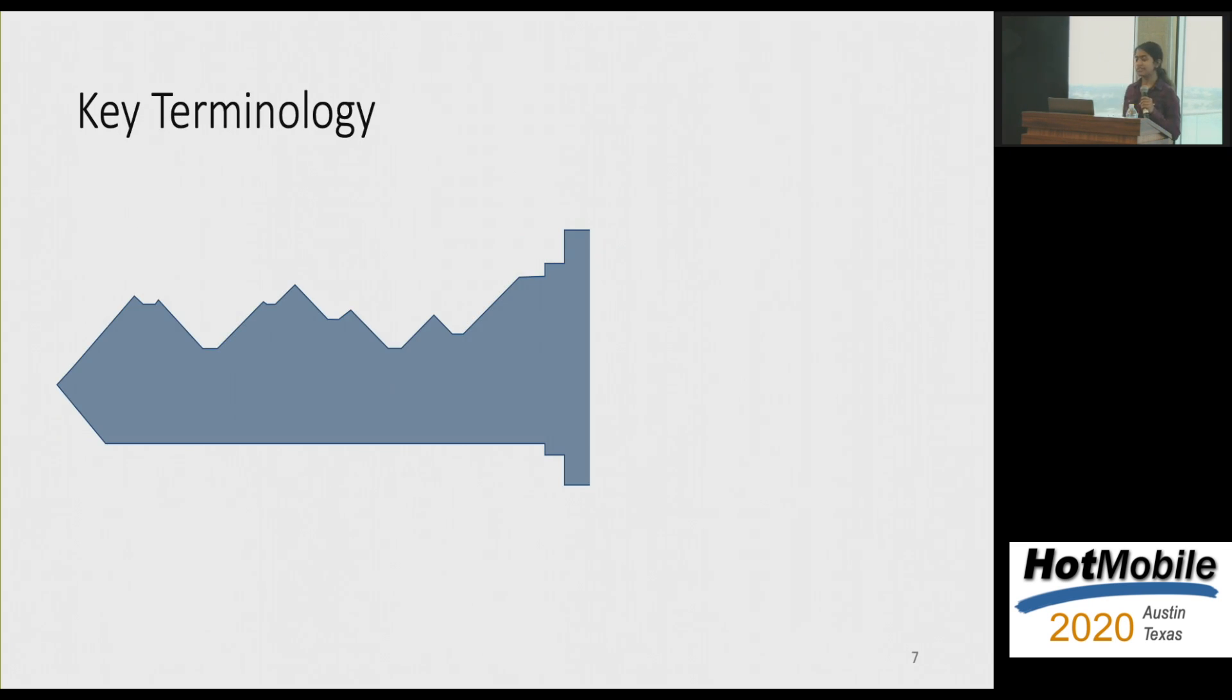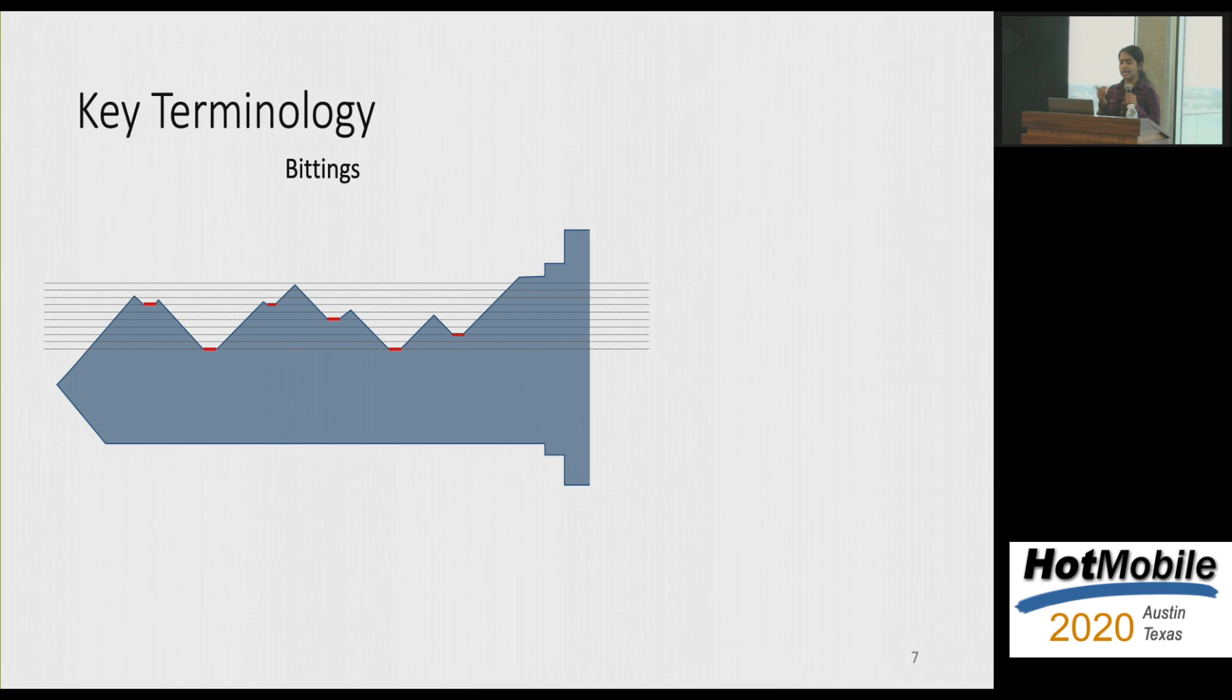So when the right key or the matching key is being inserted into the lock, the two sets of pins actually align at this particular red line, which kind of makes rotation possible. Okay, so now I kind of discuss some of the terminologies I'll be using the rest of the talk. One thing we ought to know is bittings, which are the actual secret of the key. These are six in number in this particular key, and they are essentially cuts of different depths.